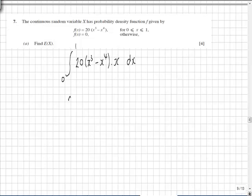In the first instance I am going to take the 20 out of the integral and multiply out the brackets to give x to the 4 minus x to the 5 dx.